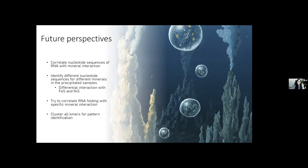Briefly, we are trying to follow four main steps: correlate nucleotide sequences of RNA-mineral interactions, identify different nucleotide sequences for different minerals in the precipitated samples—that is, for example, assessing the differential interaction with iron sulfide and nickel sulfide—and to try to correlate RNA folding with specific mineral interaction. And then finally, cluster all the k-mers for pattern identification.